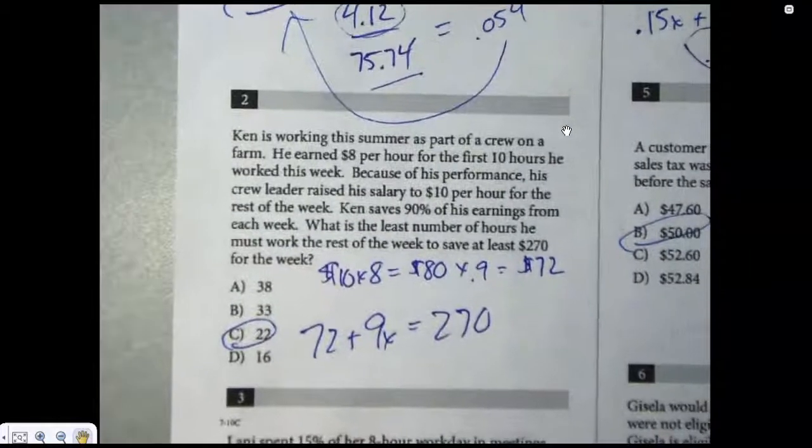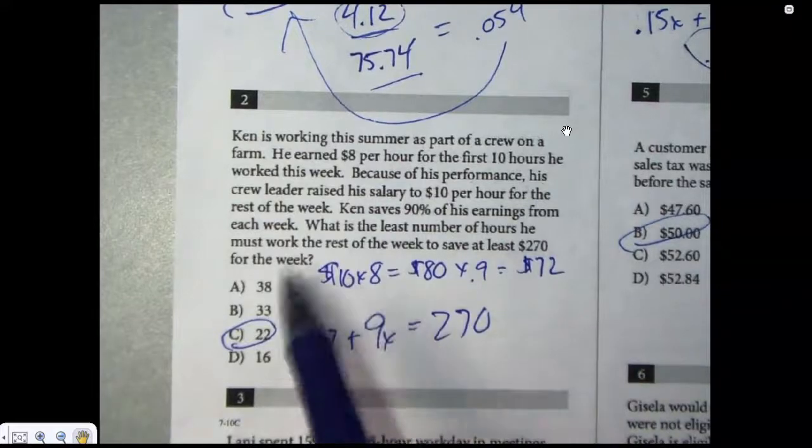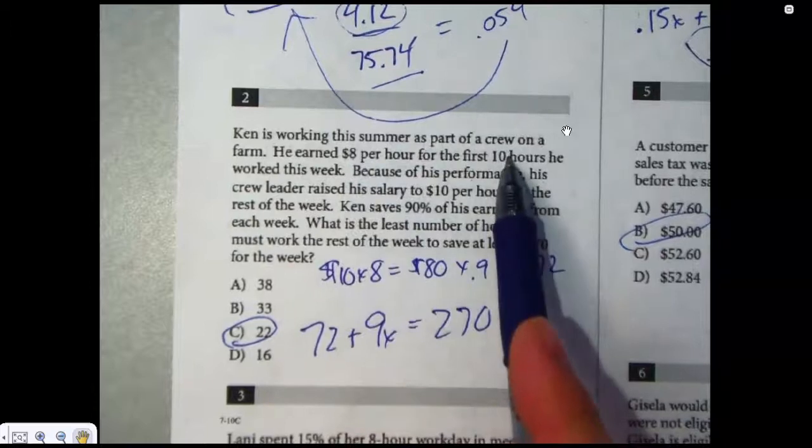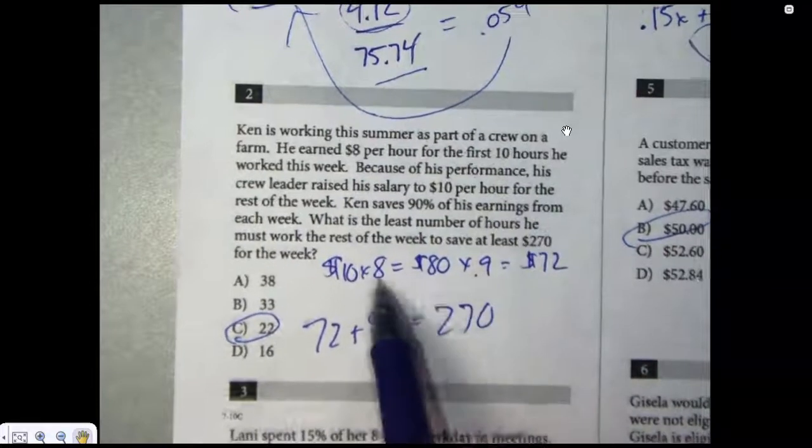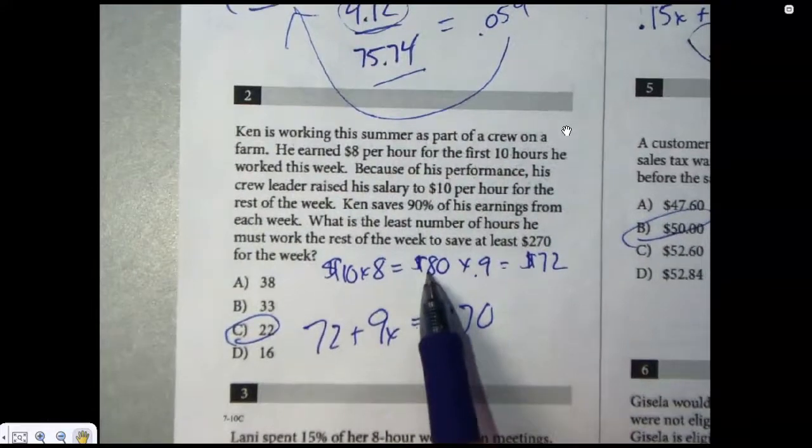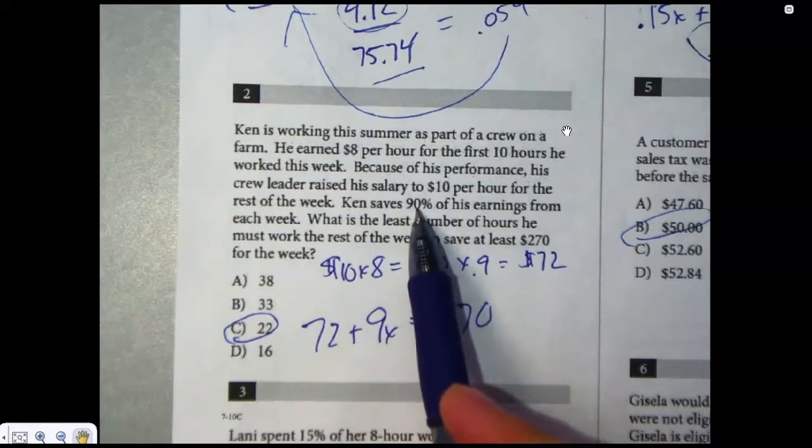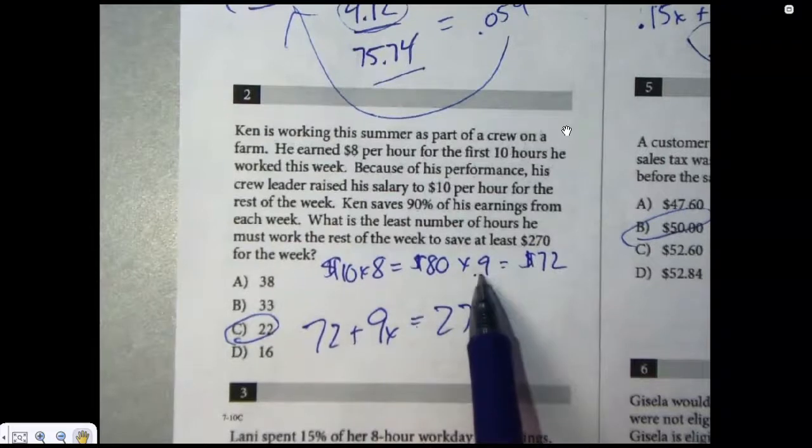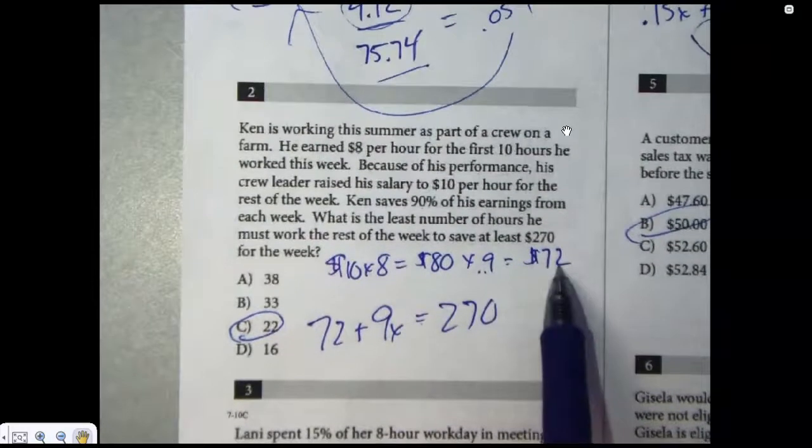Number two, this one's tricky. This one took me a few minutes to kind of make sure I had everything in the right spot. So $8 per hour for the first 10 hours. So that got me 80, but then reading through further, he only saved 90% of his earnings for each week. So of that 80 bucks, he saved 90% of it, which means 72.